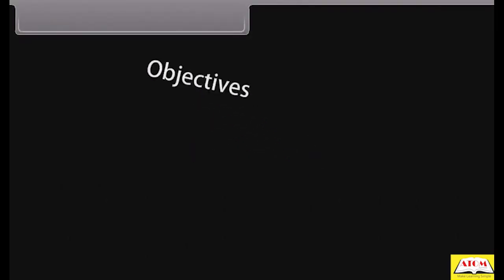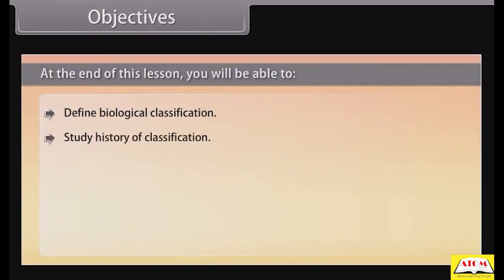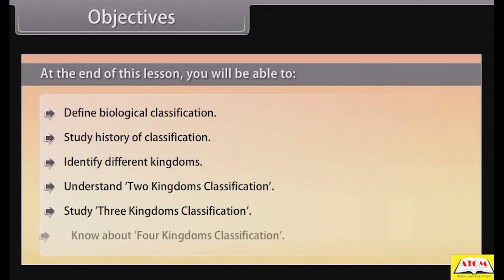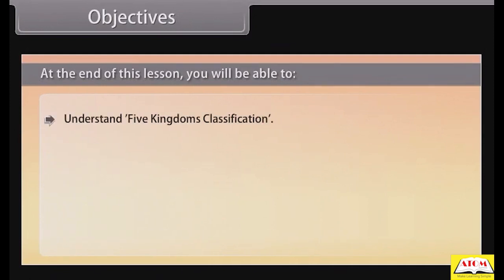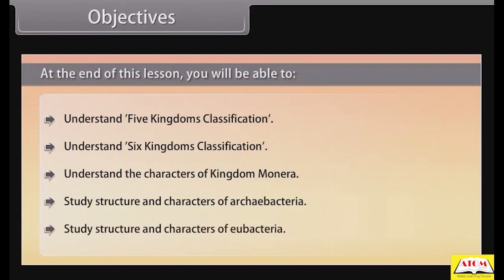At the end of this lesson, you will be able to: define biological classification; study the history of classification; identify different kingdoms; understand two kingdoms classification; study three kingdoms classification; know about four kingdoms classification; understand five kingdoms classification; understand six kingdoms classification; understand the characters of Kingdom Monera; and study the structure and characters of Archaeabacteria and Eubacteria.